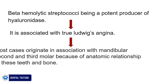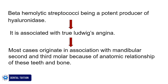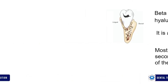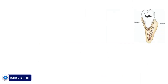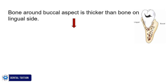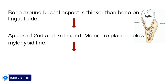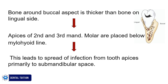Most cases originate in association with the mandibular second and third molar because of the anatomic relationship of these teeth and bone. As seen in the GIF figure, the bone around the buccal aspect is thicker than bone on the lingual side of the mandible. The apices of the second and third mandibular molars are placed below the mylohyoid line, which means periapical infection from these teeth can directly spread to the submandibular space with no obstacle to stop the infection, because the apices are below the mylohyoid line where the mylohyoid muscle originates.